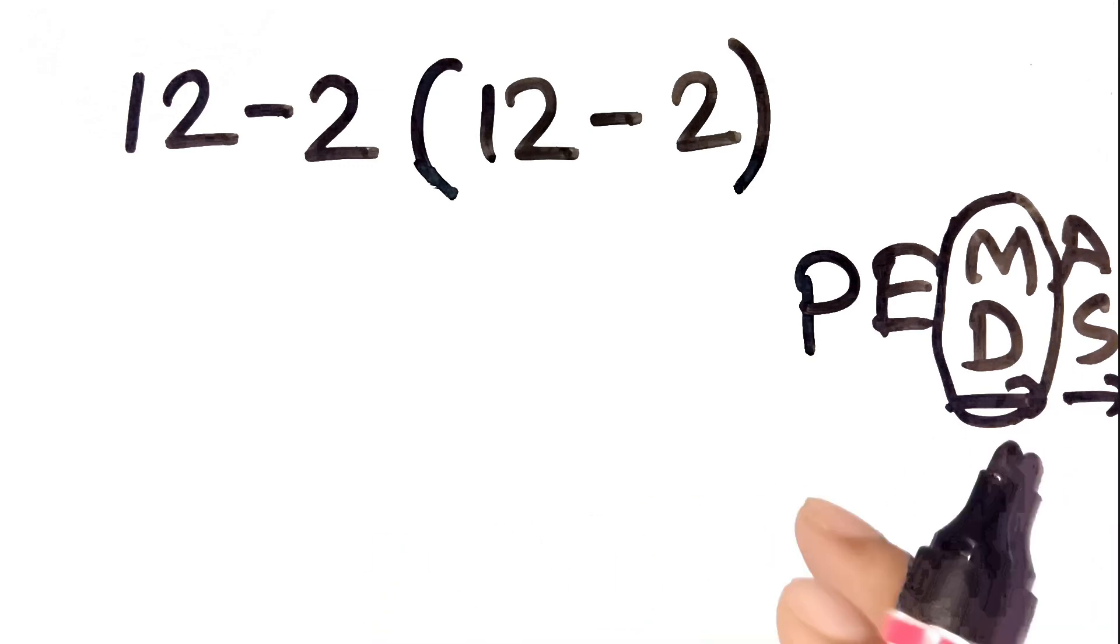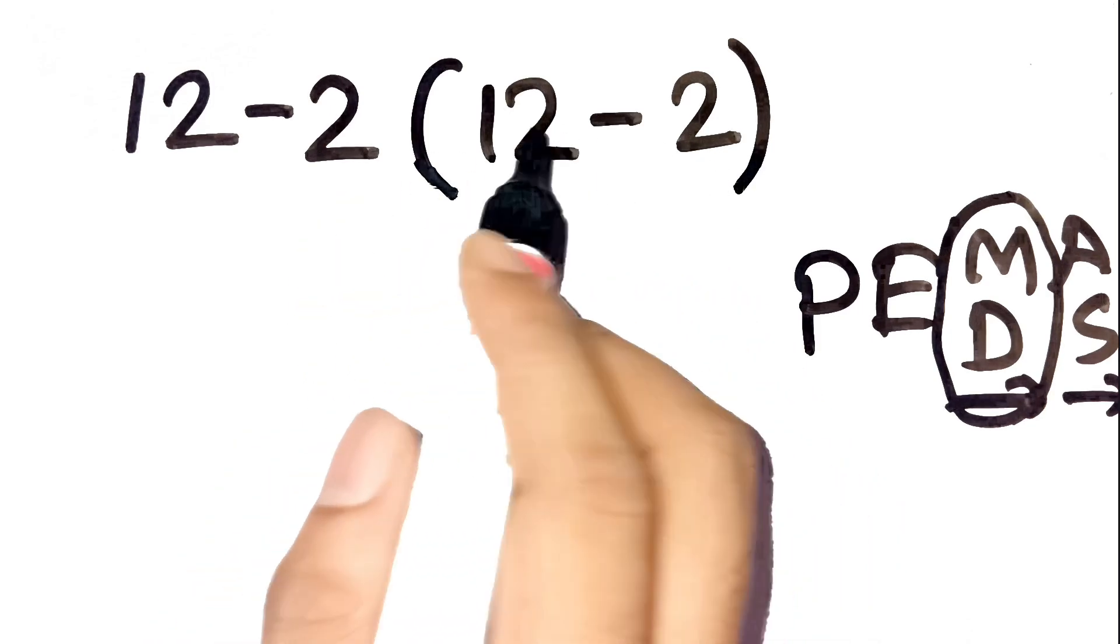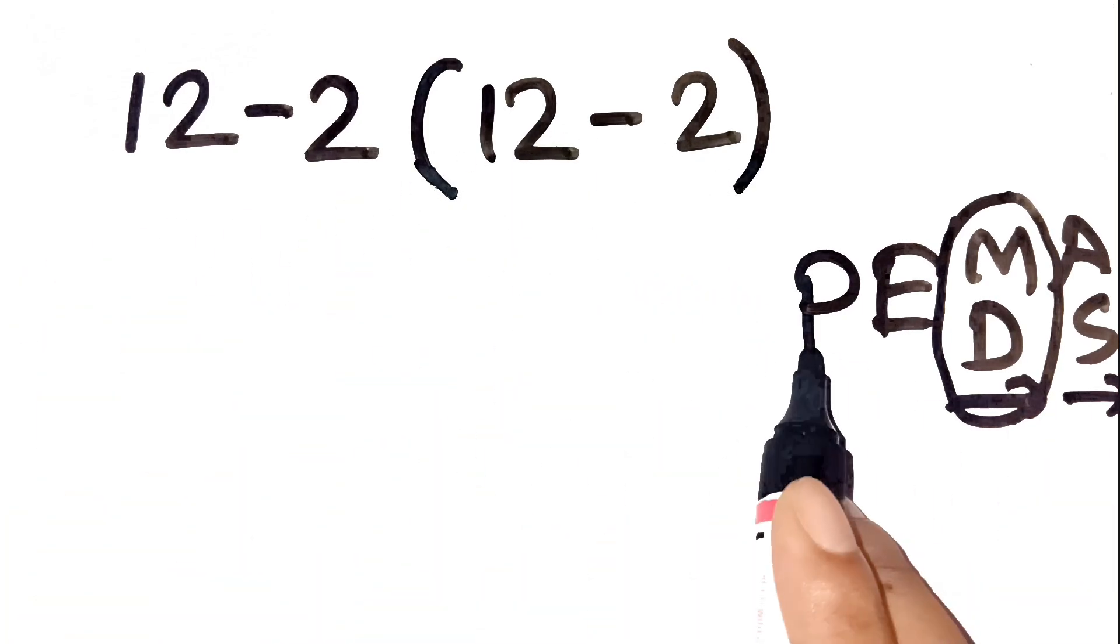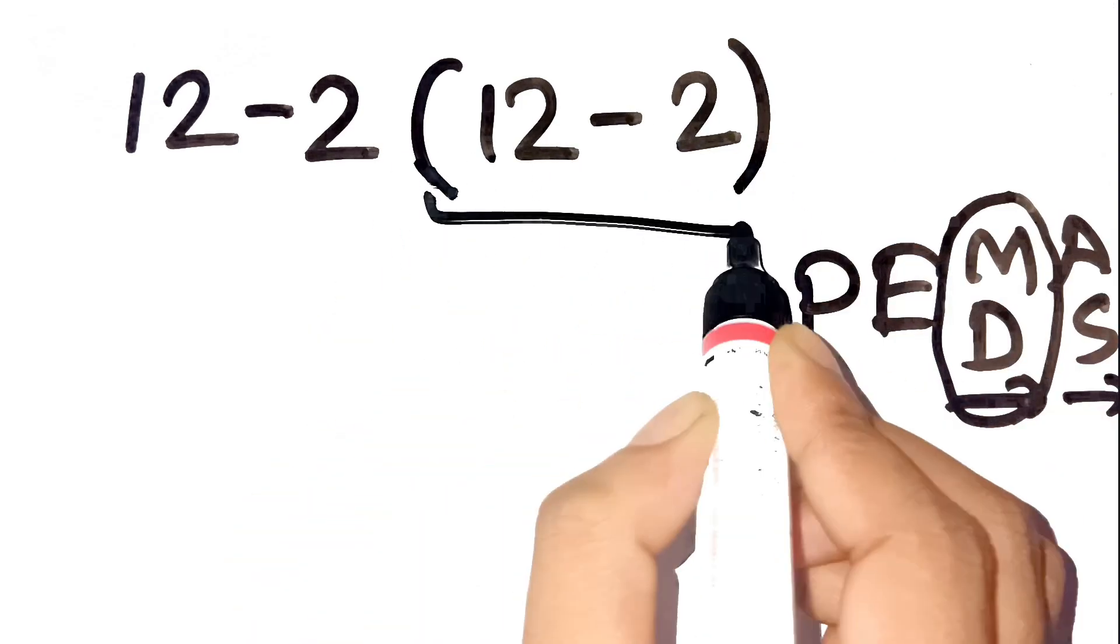So, here's the problem again. 12 minus 2 times 12 minus 2. Step 1: Parentheses first. Inside the parentheses, 12 minus 2 is 10.